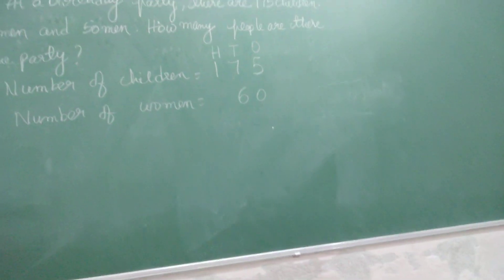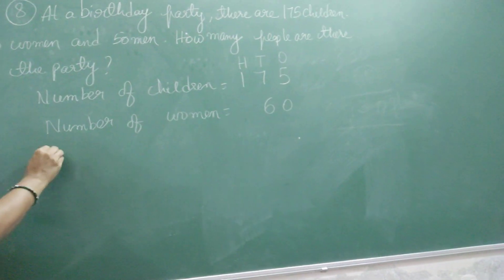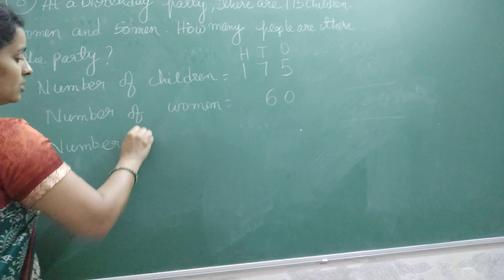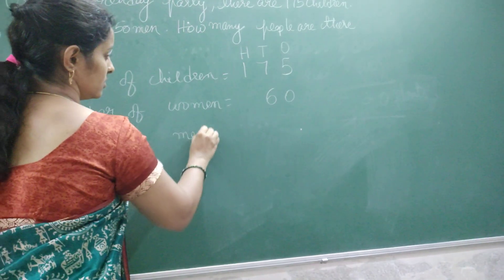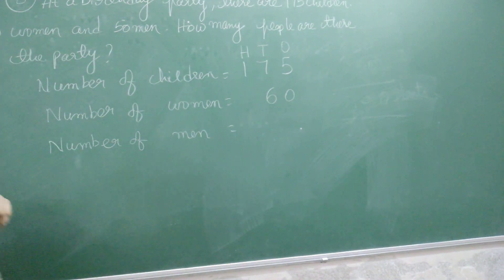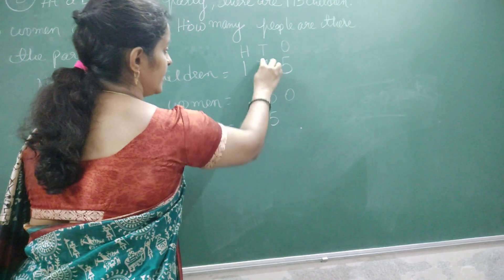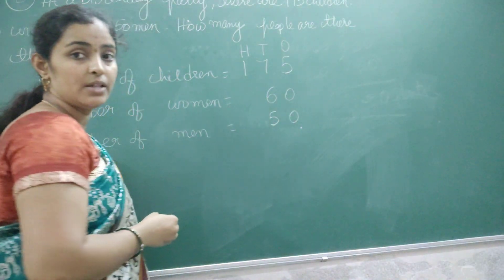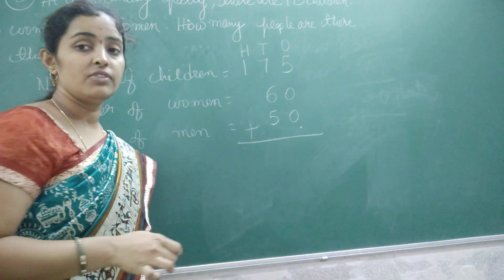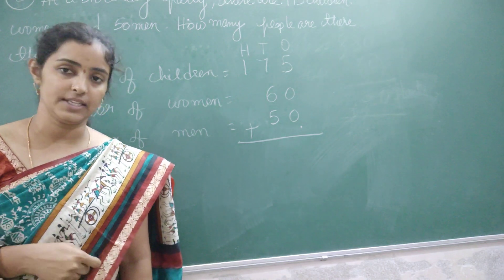Now next, number of men. So how many are there? That is 50 men. So 50 means five in the tens place and zero in the ones place. Now we will add the given numbers so that we will get the required answer — total how many people attended the party.